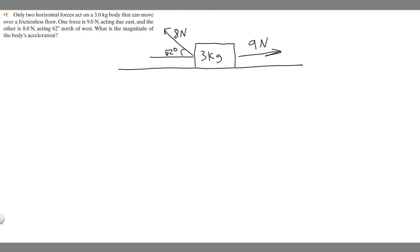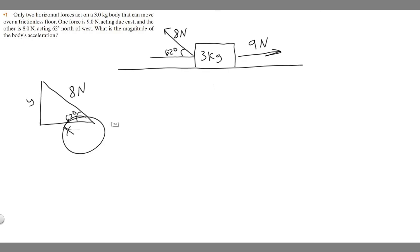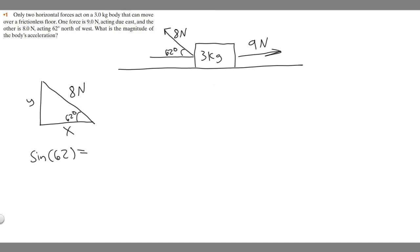We want to split the angled force into two directions — find the y component and the x component — then add them together separately to find the total. Here's our triangle: this is 60 degrees and eight newtons is the hypotenuse. The sine of 60 degrees equals opposite over hypotenuse, so sine equals y over eight. Multiply both sides by eight: y equals eight times the sine of 62 degrees.